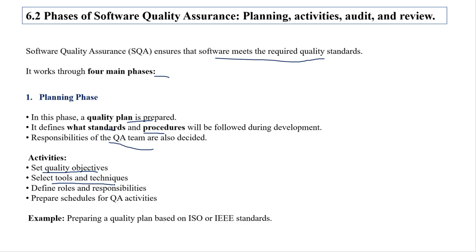In the planning phase, we select proper tools and techniques so that the software being built is of quality. We define roles and responsibilities — who will do what, which employee does what, who will be manager, who will be team leader. We also prepare a schedule for QA activities. An example is: preparing a quality plan based on ISO and IEEE standards.